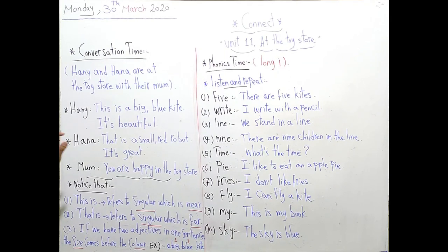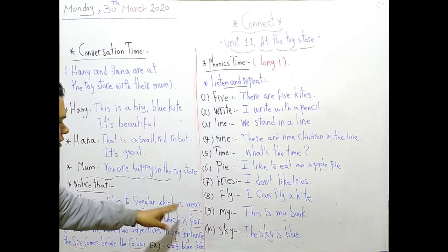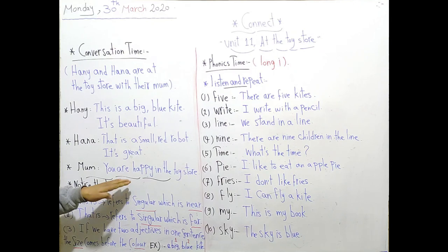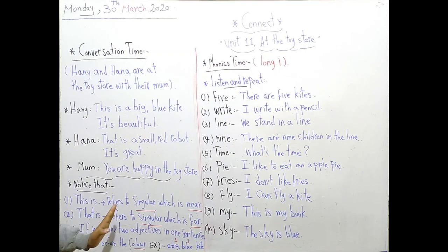Notice that we have three important points here. Number one. Honey says this is, and Hannah says that is. Why? What is the difference between this is and that is? Number one: this is refers to singular, singular means one thing, only one thing which is near from you. For example, this is a port, it's near. What about that is? That is a cloud in the sky, because it's far from you.